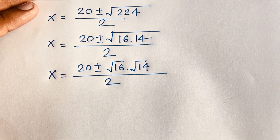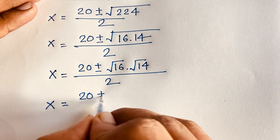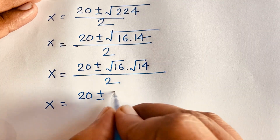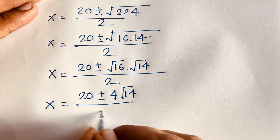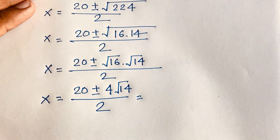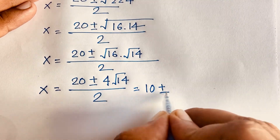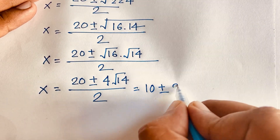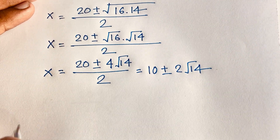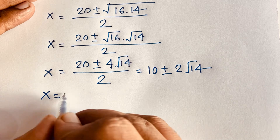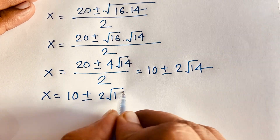So x equals 20 plus or minus square root of 16 times square root of 14, all over 2. Since square root of 16 is 4, this becomes 20 plus or minus 4 root 14, over 2. Dividing through by 2, x is equal to 10 plus or minus 2 root 14.